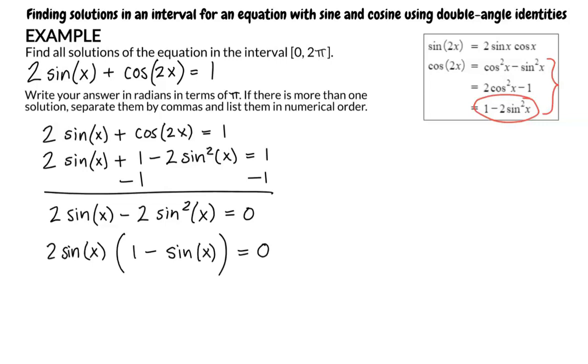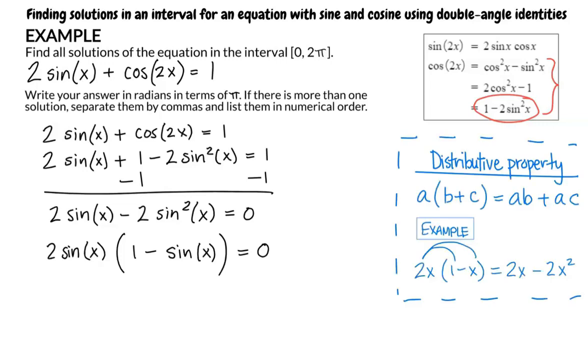Next, we factor out 2 sine of x. Why can we factor out 2 sine of x? We use the distributive property. Just as 2x times 1 minus x is equal to 2x minus 2x squared, 2 sine of x times 1 minus sine of x is equal to 2 sine of x minus 2 sine squared of x.